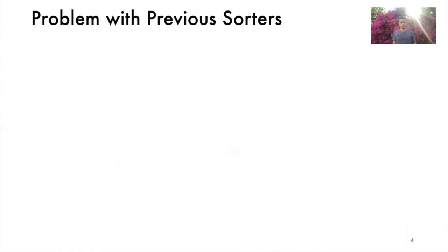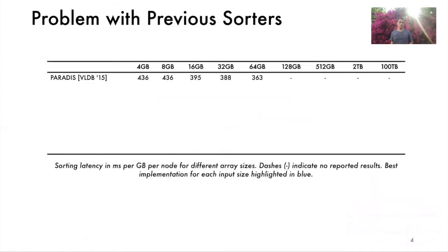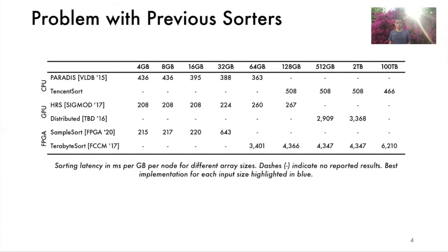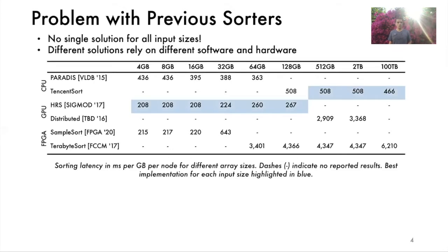Let's look at sorting performance in latency per gigabyte for state-of-the-art CPU, GPU and FPGA sorters. We list performance over a vast range of array sizes from four gigabytes to 100 terabytes. Lower values are better. Paradis is the fastest CPU sorter but only considers arrays that fit into its 64 gigabyte RAM. Dashes in the table indicate no reported results. Tencent sort uses a distributed system of CPU nodes to achieve world record results in the terabyte scale range. Here are respectively the best single GPU and distributed GPU sorters as well as FPGA sorters. We highlight the best performing implementations for each array size in blue. The key insight is that each sorter performs well only within a specific problem size.